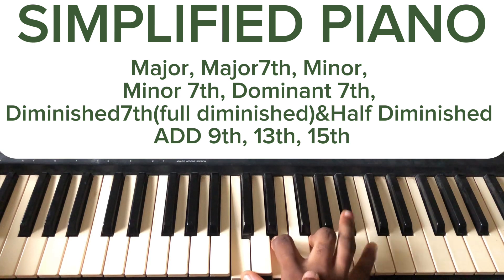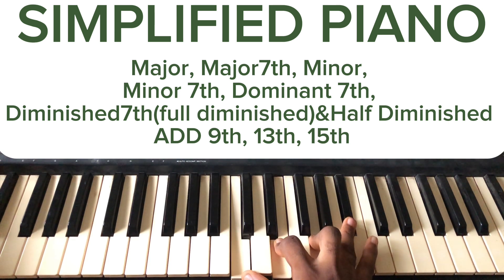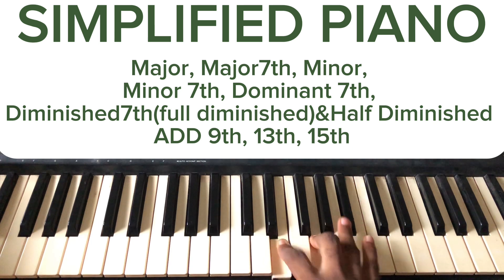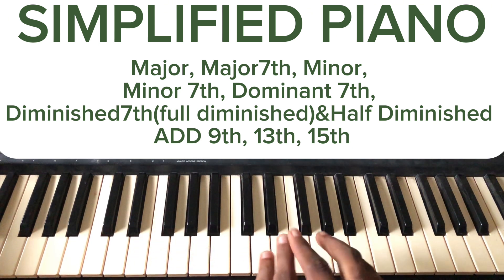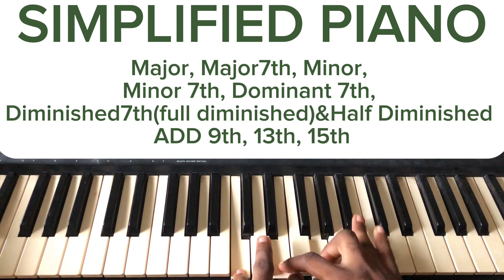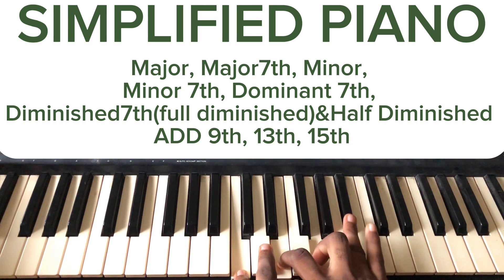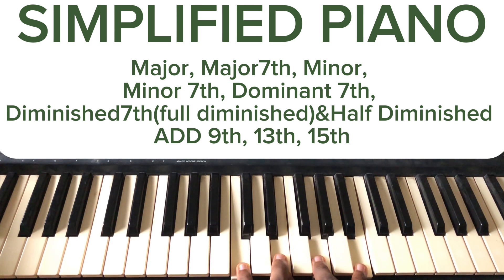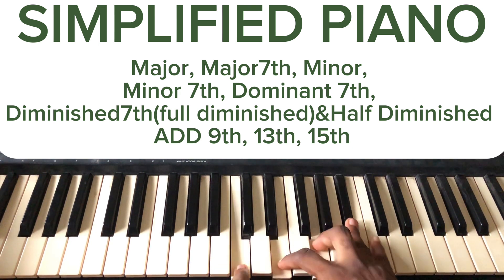If I flatten the B of this major seventh, it gives me a dominant seventh chord. A dominant seventh chord means I'm playing Do, Mi, Sol and adding the Ta to it. If I add my Ti to Do, Mi, Sol, it gives me a major seventh chord. If I add my Ta, it gives me a dominant seventh chord.